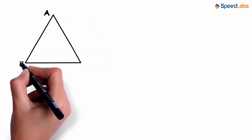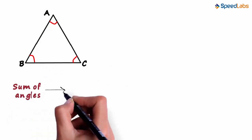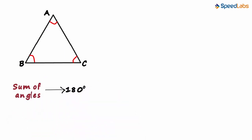Look at this triangle ABC. The sum of the angles of the triangle always equals 180 degrees. Angle A plus angle B plus angle C equals 180 degrees.